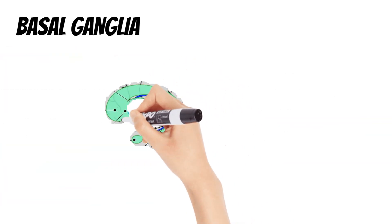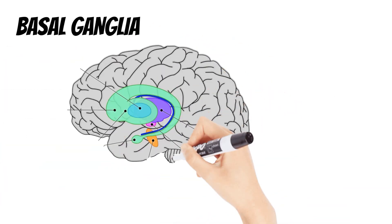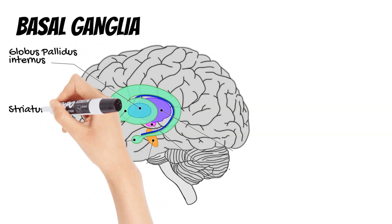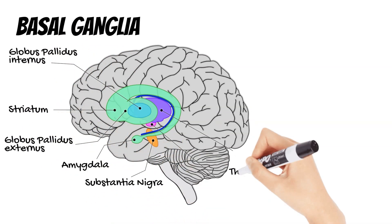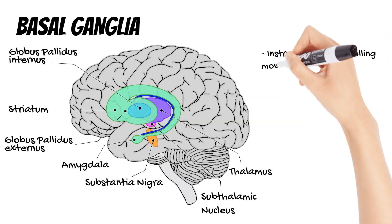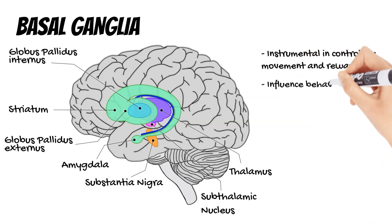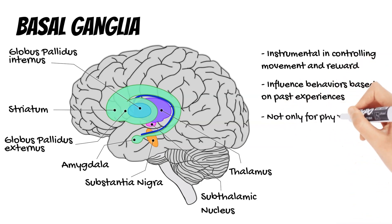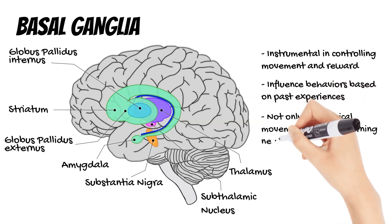Adjacent to the limbic system, the basal ganglia are instrumental in controlling movement and reward. These deep brain structures fine-tune motor actions and are involved in the reward circuitry, influencing behaviors based on past experiences and expectations of reward. Their function is crucial not just for physical movement, but for habits, learning new skills, and even aspects of personality.